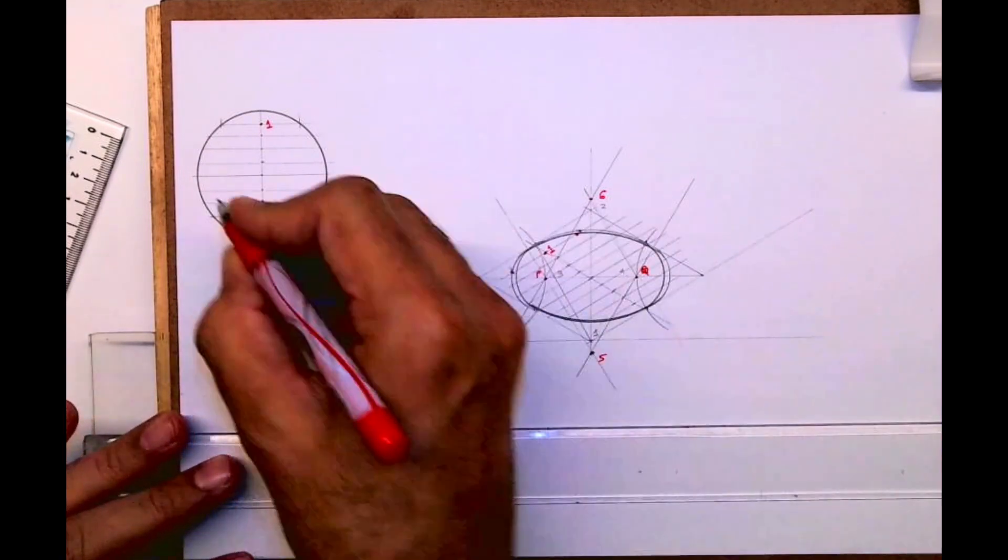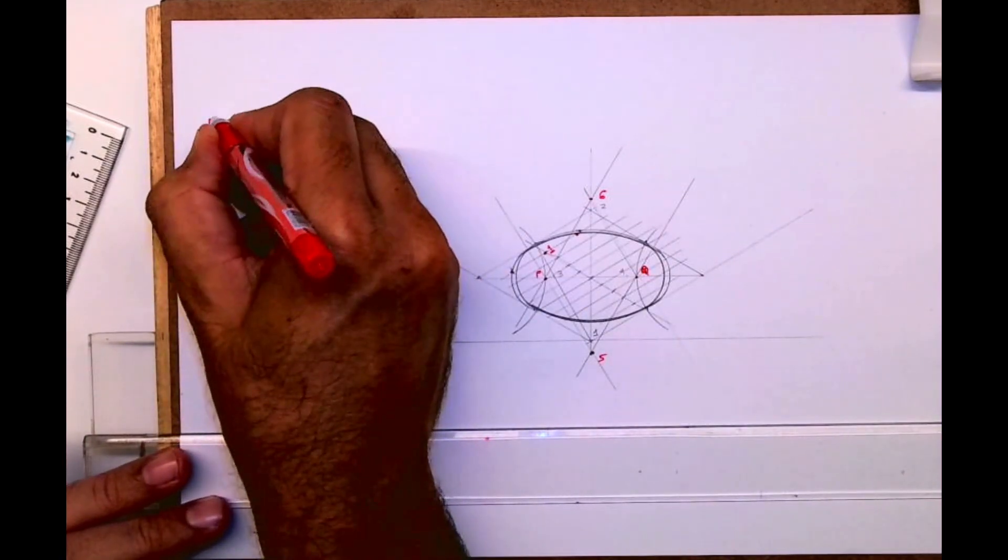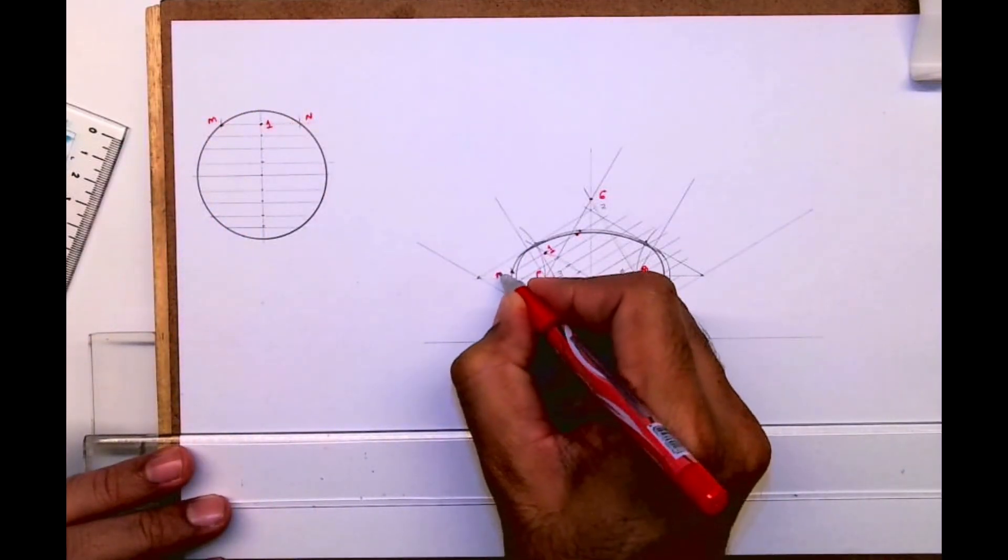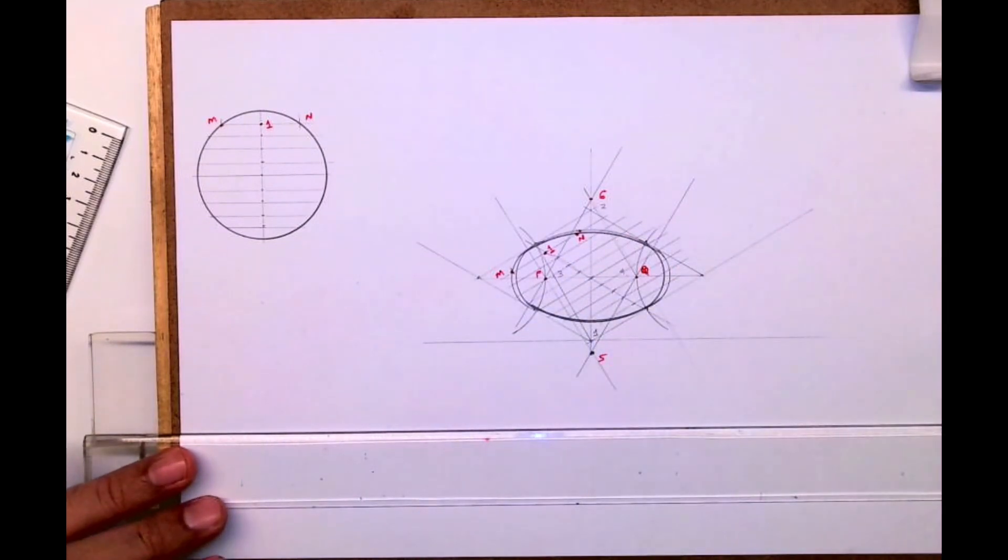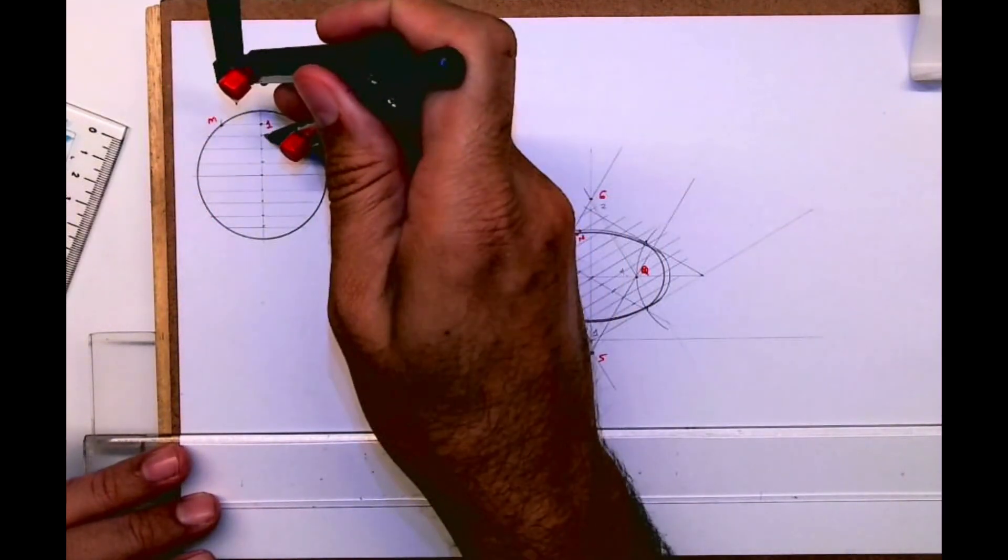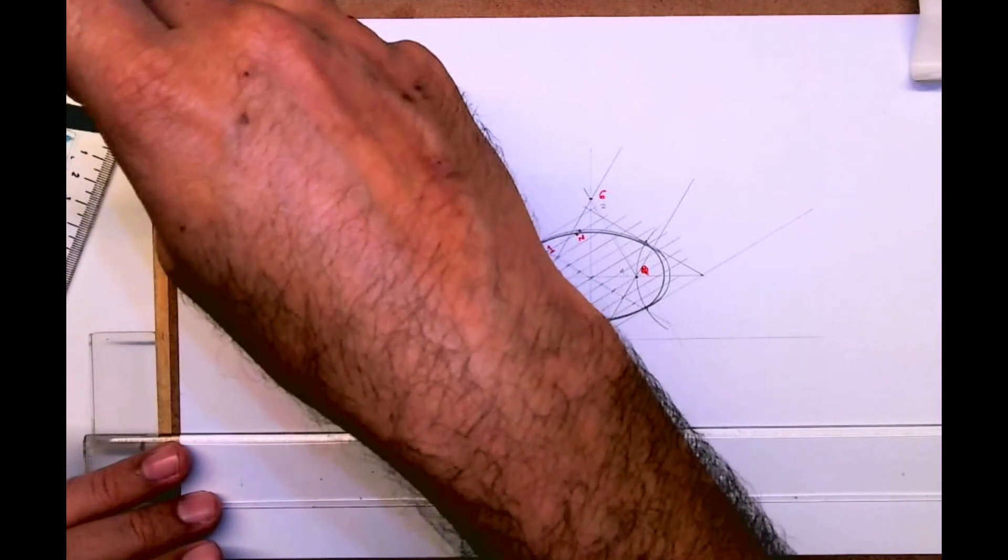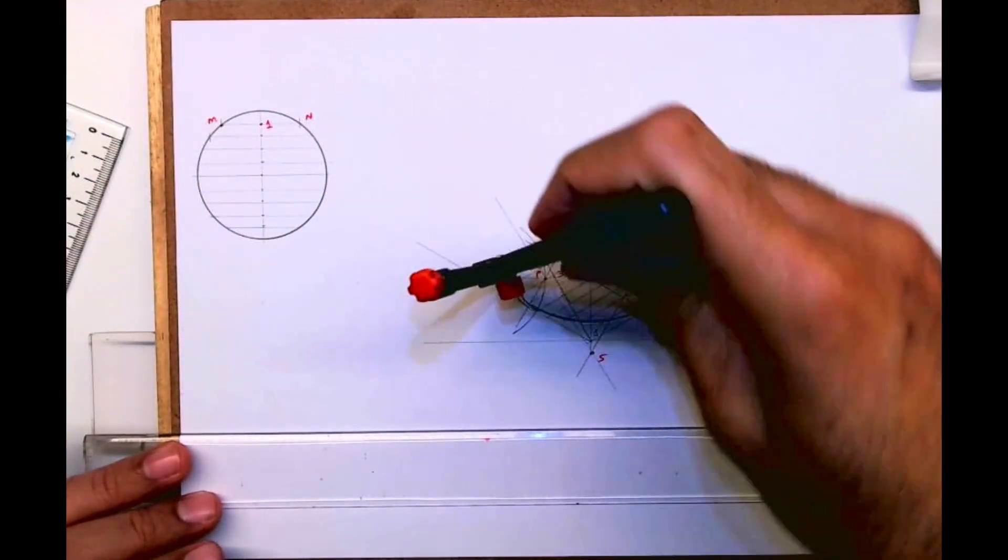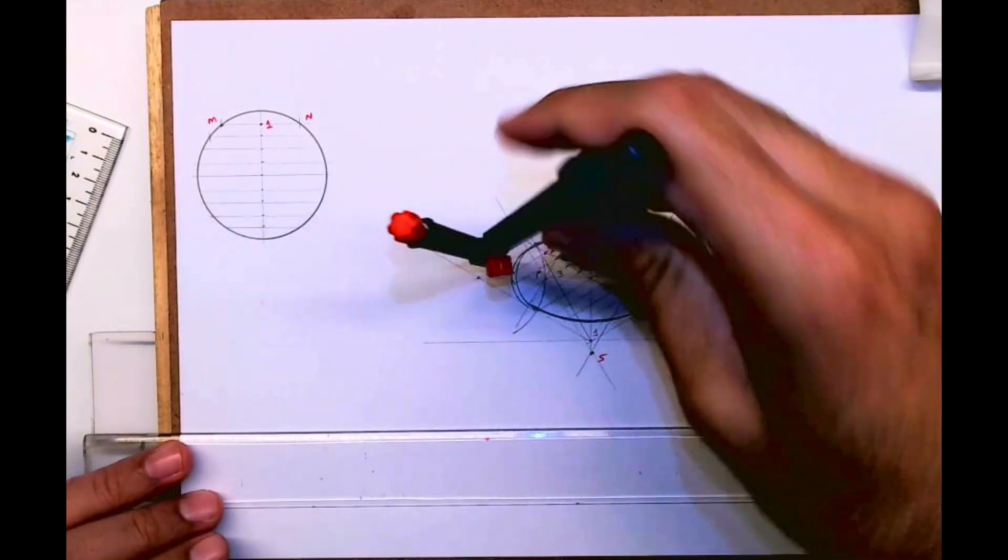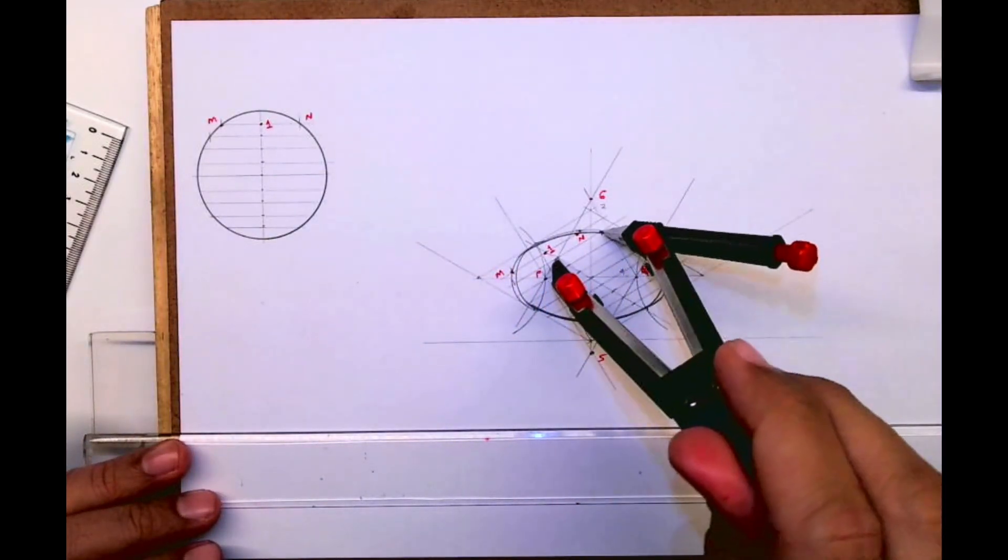If you remember when we were doing that curve, I said the lower one. See this M, N. If you see one more time, I'll just show you one more. From point two I'm taking this distance, and from here when I'm going to cut, see, it is cutting outside and here it is inside.